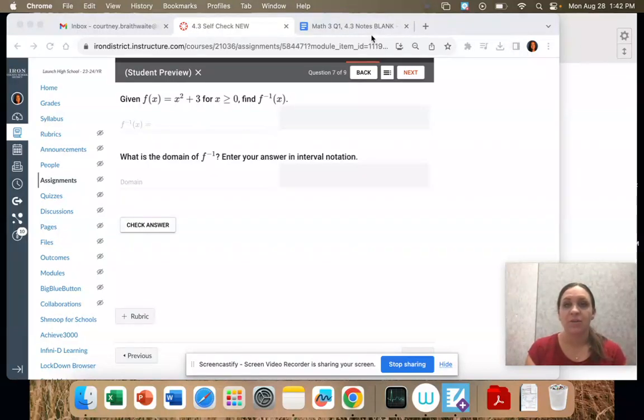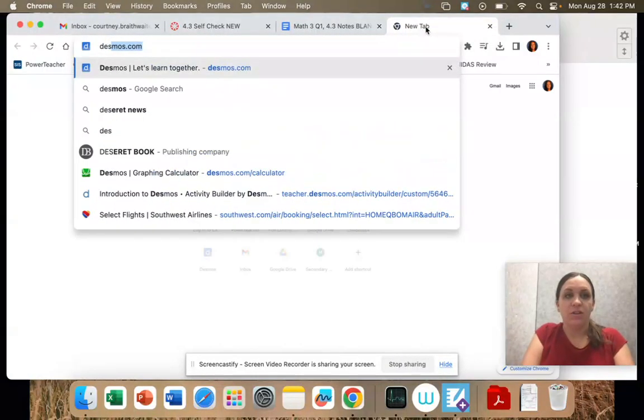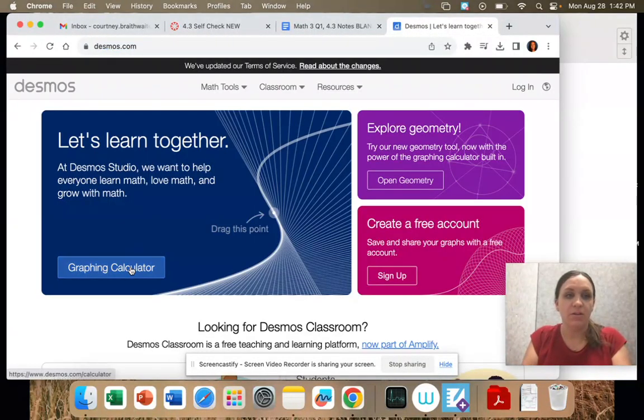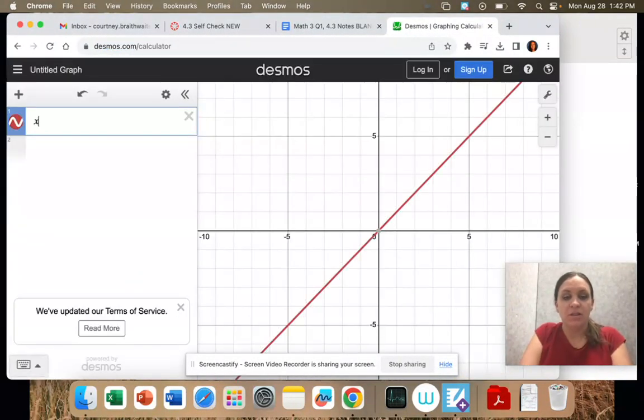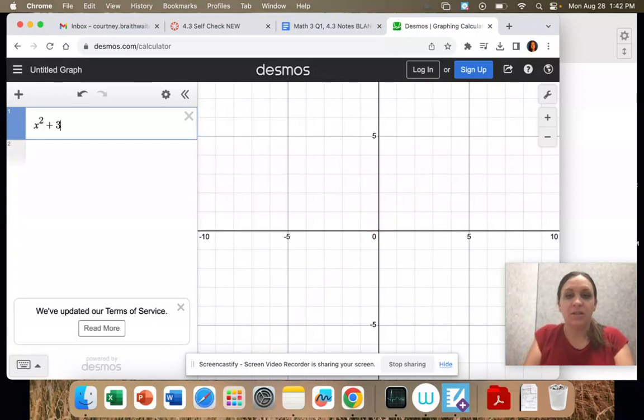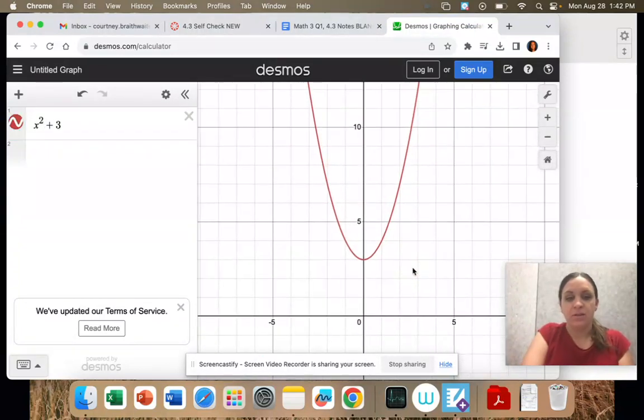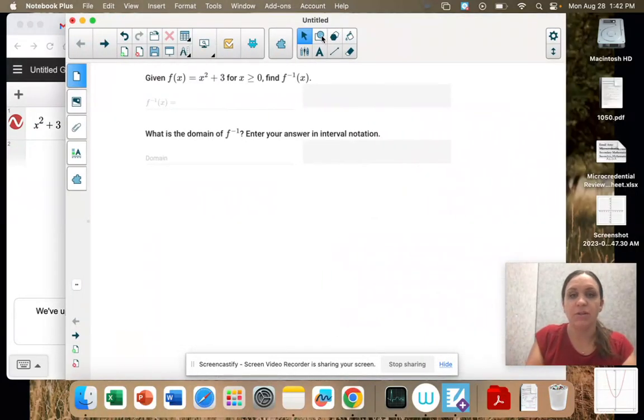So x squared plus 3, I just want you to look at it. So I'm going to go to Desmos and graph x squared plus 3. So here's our graph. I want to write on it, so I have to take a screenshot and move it over.